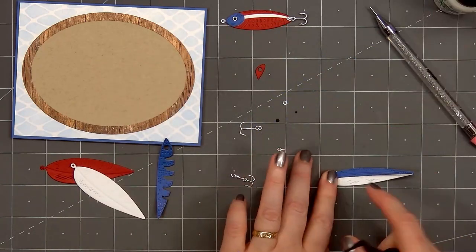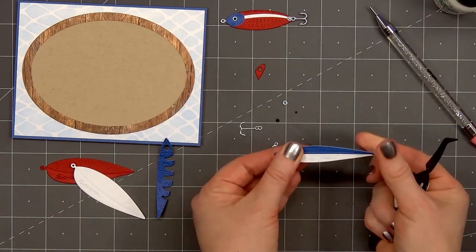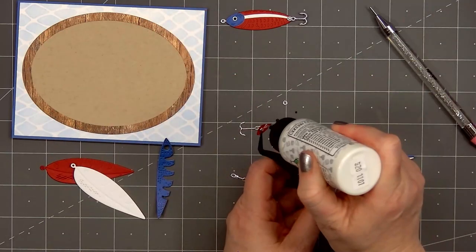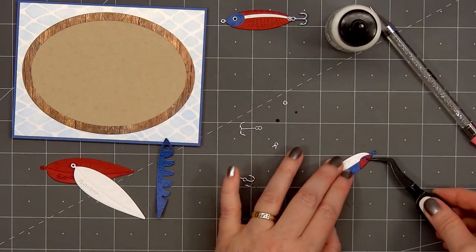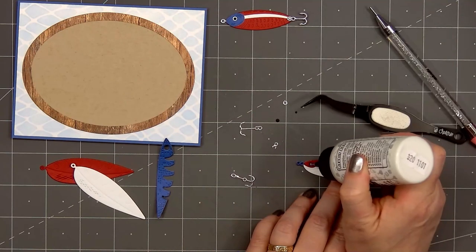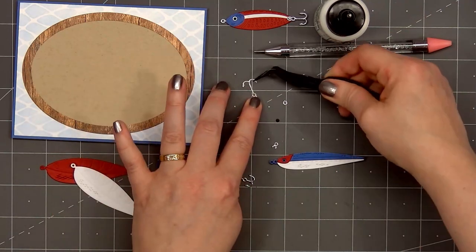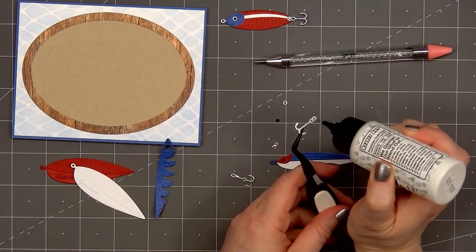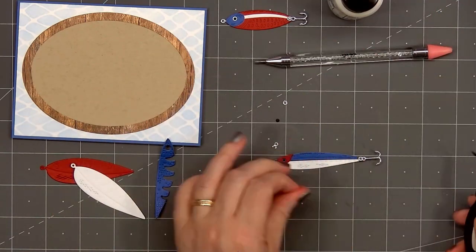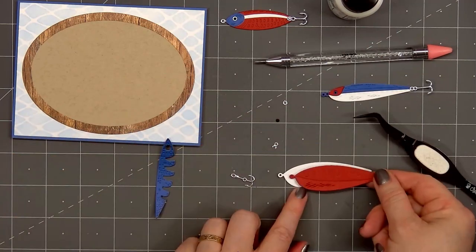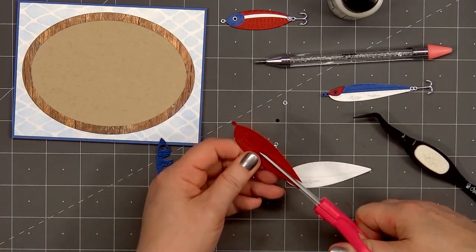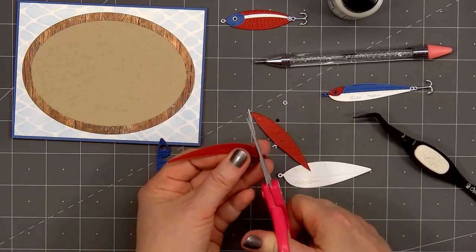Along with the three fish lures, there's also a little feather lure and a bobber. So there's lots of fun vintage lure variety on this set. The assembly is very simple. Most of the lures only have a few layers, plus the hooks and the eyes. If you're not sure which piece goes with which, Honey Bee Stamps does have a layering guide on their website.